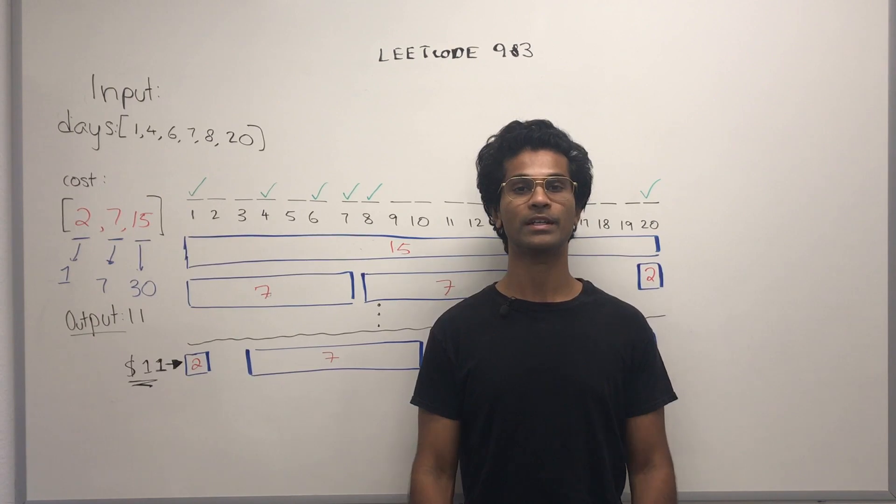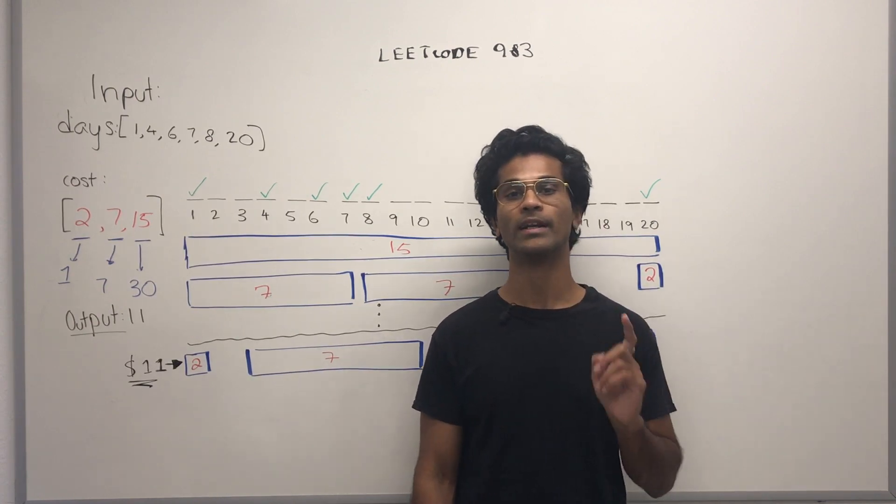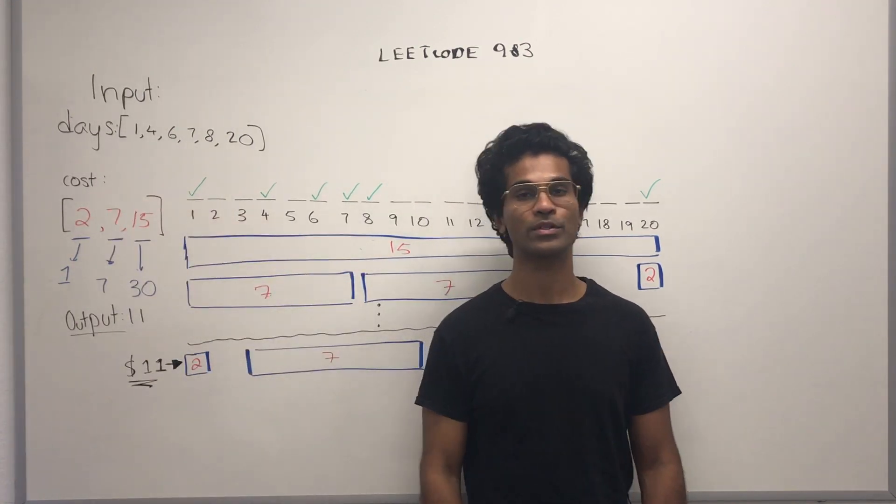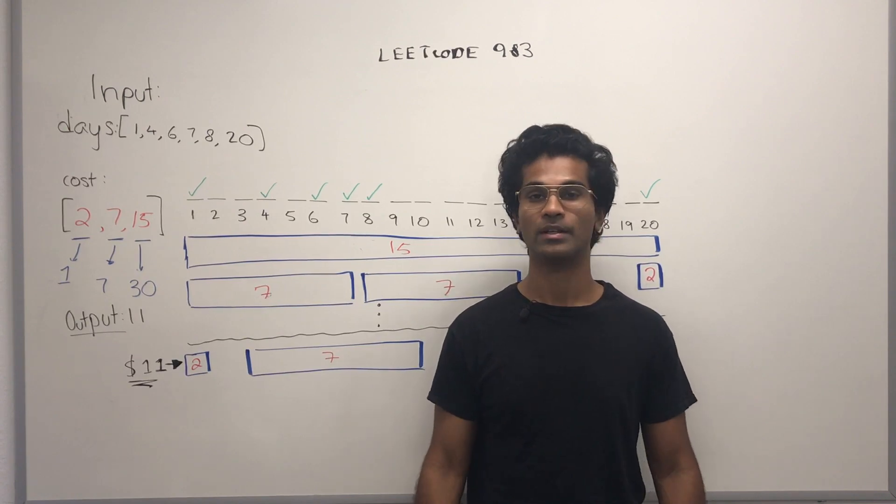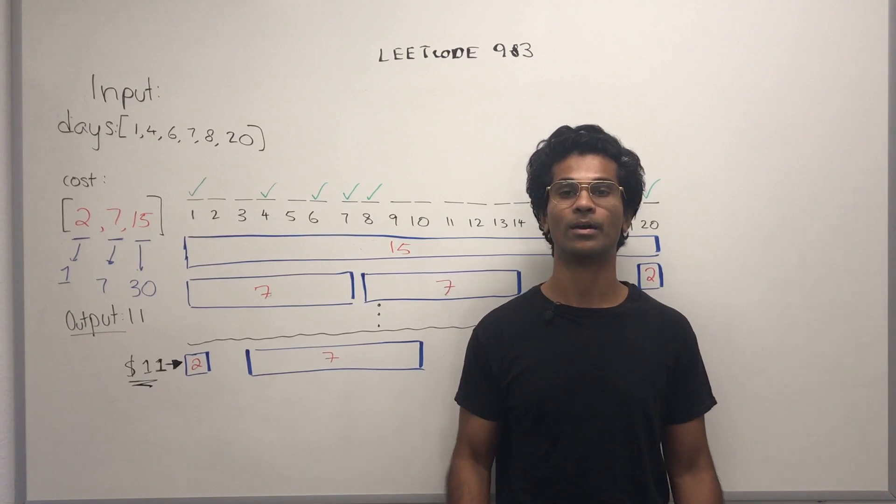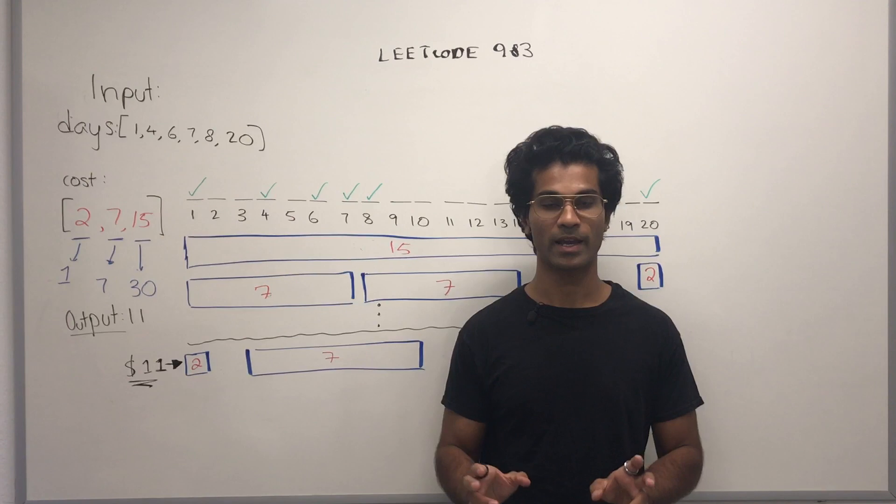The input is going to be two integer arrays and the output is going to be one integer. The days array represents all the days that we want to travel in a given year. We're going on a vacation, so we want to travel, and we want to make sure that we can travel in the lowest and cheapest way we possibly can.